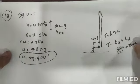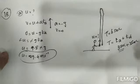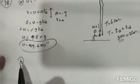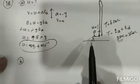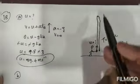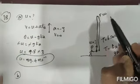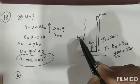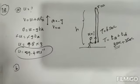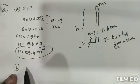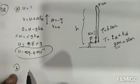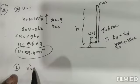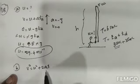Now for Part B: the maximum height reached. We use the height-velocity relation from equations of motion: v² = u² + 2as. Here s is the displacement, that is the height, and a = −g. After reaching maximum height, final velocity v = 0.